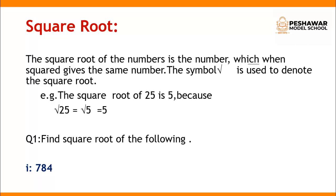The symbol used for finding the square root is called the radical, and the value of the radical is 1/2. The number written inside the radical is known as the radicand.